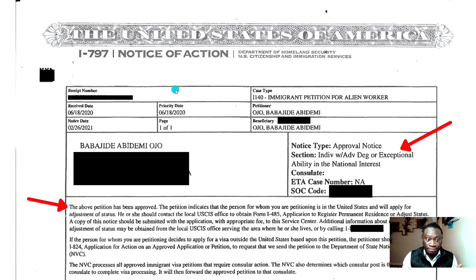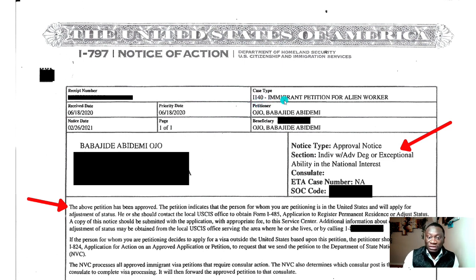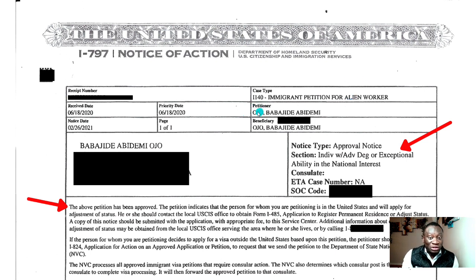So let's see what happened here. The application was received on the 18th of June 2020, and I received this notice in February 2021. The case type is Form I-140, which is the government form for filing immigration applications in the United States. This case type is 'Immigrant Petition for Alien Worker' — if you are familiar with U.S. government terms, they often call us aliens. The petitioner and beneficiary are both Babajide Abidemi Ojo.